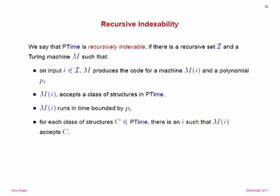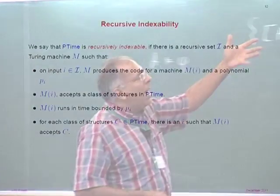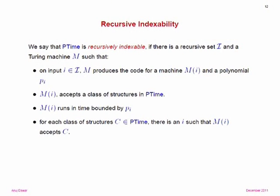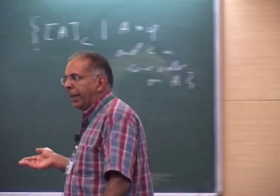Gurevich's formulation: we say that the class polynomial time is recursively indexable if there is some recursive set I and a machine M — think of I as the logic for P, and M as the compiler. On any input I, M produces the code for a machine M_I and polynomial P_I; M_I running within time bounds P_I accepts a class of structures in P time. And for each polynomial time class of structures C, there is some I such that M_I accepts C. Gurevich's conjecture is that P time is not recursively indexable — a strong conjecture that in particular implies P is different from NP.